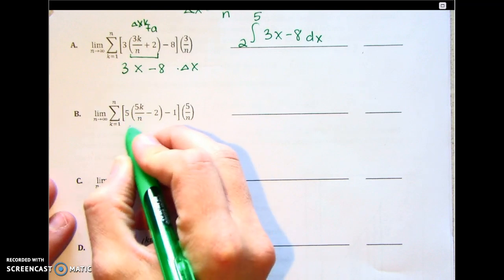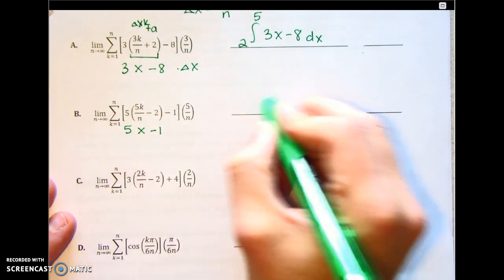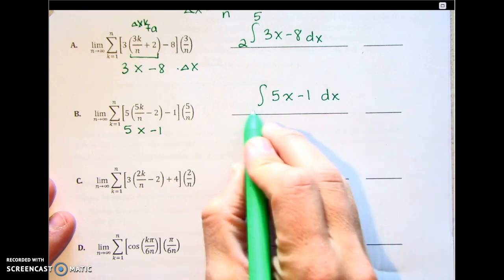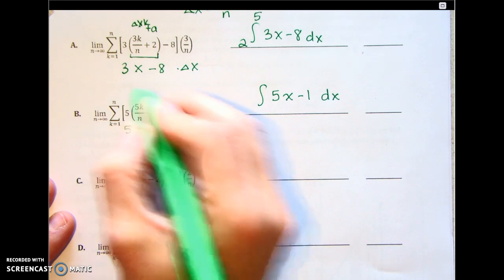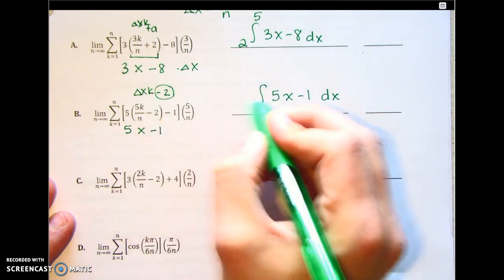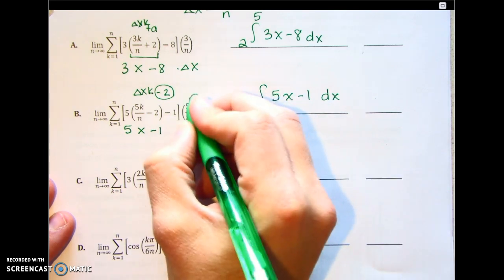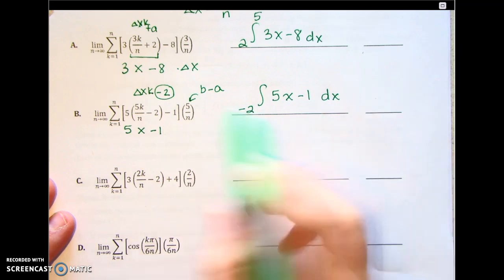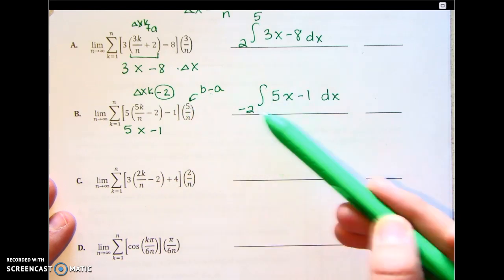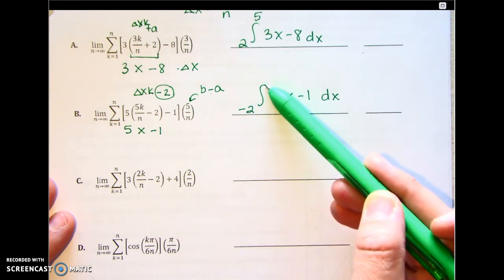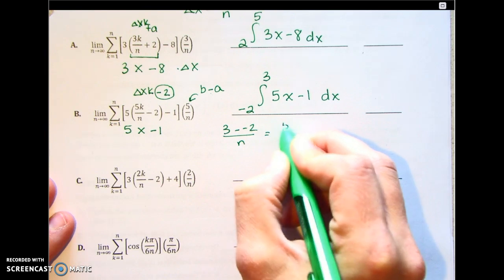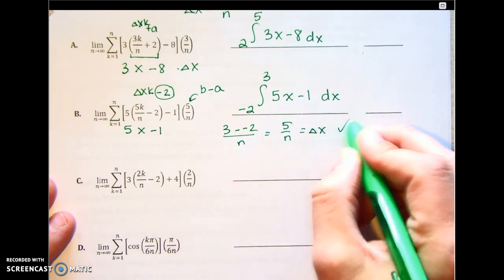The function here is 5x minus 1, so we have the integral of 5x minus 1 dx. The starting value a comes from inside the expression — it's negative 2. This value here is b minus a, so what minus negative 2 equals 5? Traveling 5 units from negative 2 gets us to 3. So b is 3. Check: 3 minus negative 2 equals 5 over n — yes, that's our delta x.